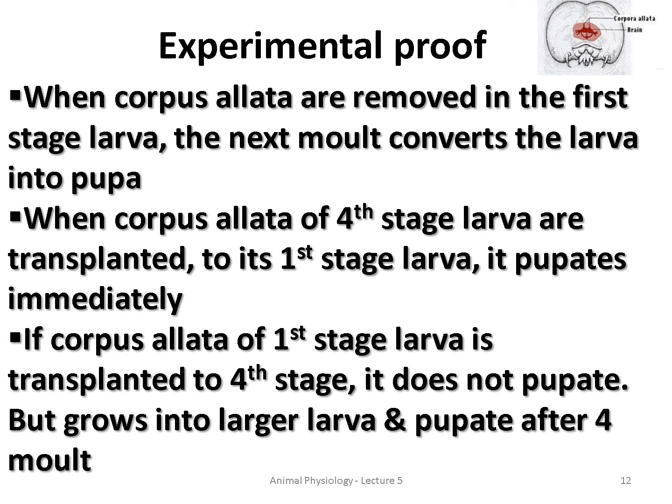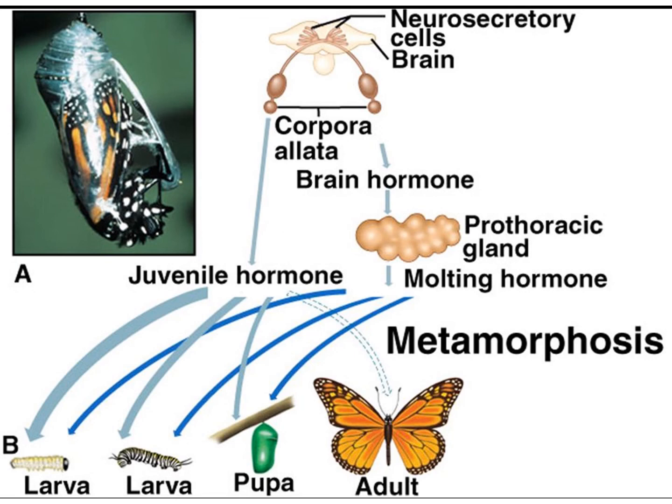If the corpora allata of a first-stage larva is transplanted into the fourth stage, it does not change immediately, because the hormone secretion will be low. But it grows as a larger larva and pupates after the fourth molt. This is a simple experimental proof showing that Juvenile Hormones are very important for the molting process and conversion of larva into pupa.